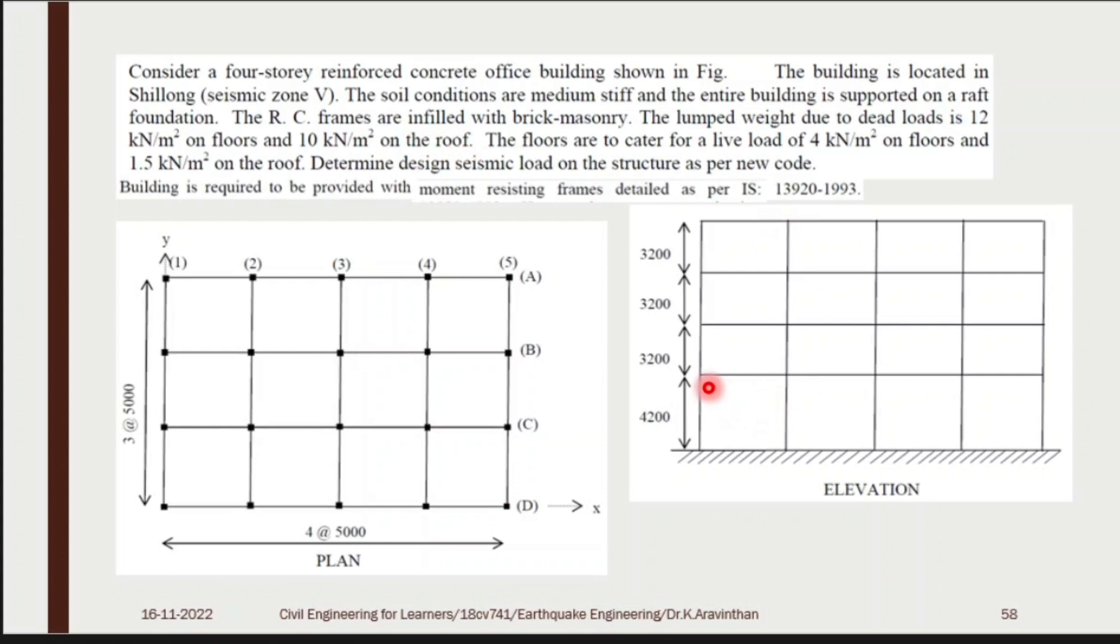So how many floors are available? One, two, three. So three number of individual floors and one roof. The last floor is known as roof. The rest of the floors are having a dead load of 12. The roof is having a dead load of 10. The floors are to cater a live load of 4 kN/m² on floors and 1.5 kN/m² on roof.